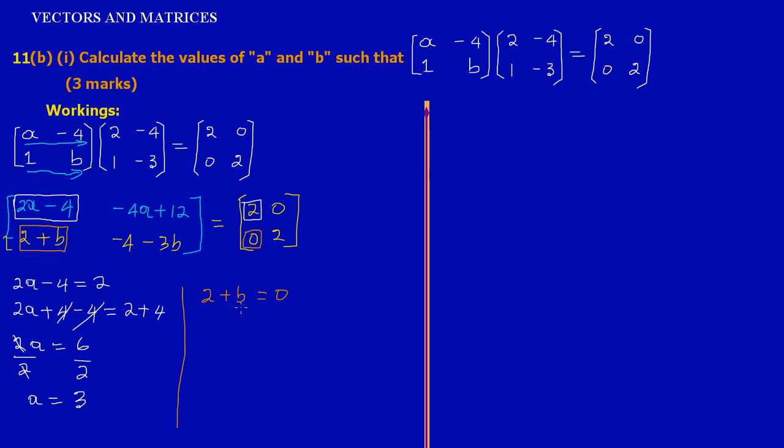Now basically since 2 is being added here, I'm going to subtract 2 from both sides. So 2 minus 2 plus b must be equal to 0 minus 2. These two will cancel out, therefore b is equal to negative 2. So here we can state our values.